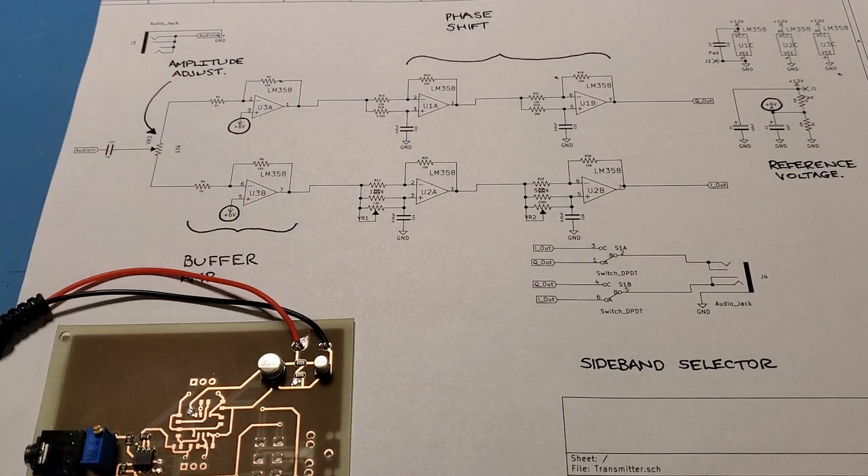The first part of the circuit I'm going to build is the audio phase shift network. Here's the circuit for that. I will include links to these circuits and the KiCAD schematics and PCBs on the git repo. This audio phase shift network is exactly the same as the one we used in the receiver: same resistor values, same capacitor values, and obviously the same op amps.